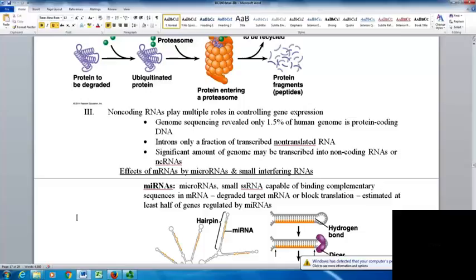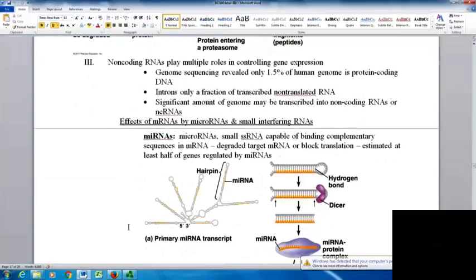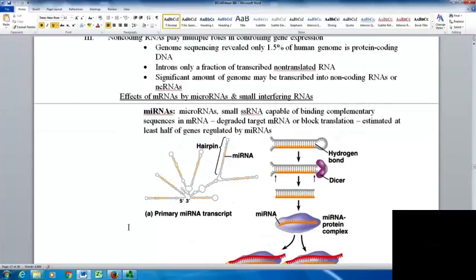A lot of the genome is used for regulation. A couple of these are microRNAs and small interfering RNAs. MicroRNAs are small single-stranded RNAs capable of binding to complementary sequences in mRNA. When they do, the degraded target mRNA breaks down or translation is blocked. It's estimated that at least half the genes are regulated by microRNAs.